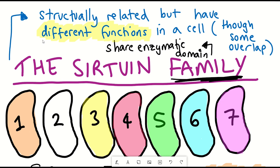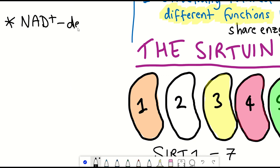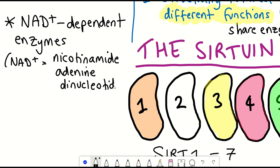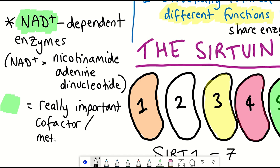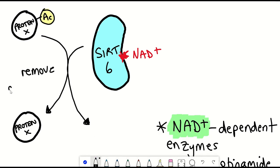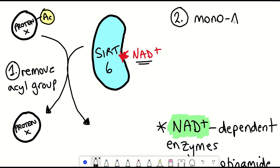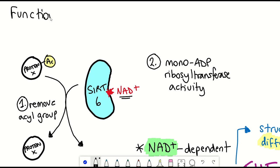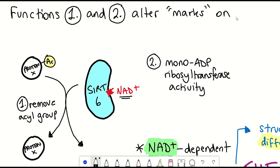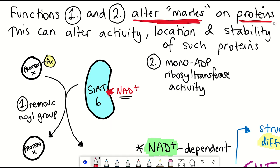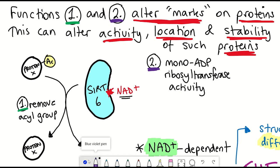So what are their activities? Sirtuins are NAD+ dependent enzymes, meaning their enzymatic activity depends on the availability of NAD+, standing for nicotinamide adenine dinucleotide, which is a really important cofactor found within cells. With the availability of NAD+, sirtuins can carry out protein deacetylation — the removal of acetyl groups from different proteins — and they also possess mono-ADP ribosyltransferase activities. Basically, they have the ability to modify what marks are present on different proteins, and by modifying these marks it can affect the stability, localization, and activity of a variety of different proteins.